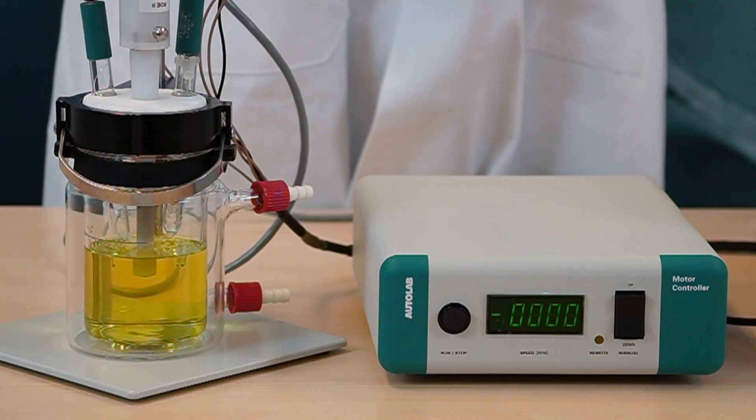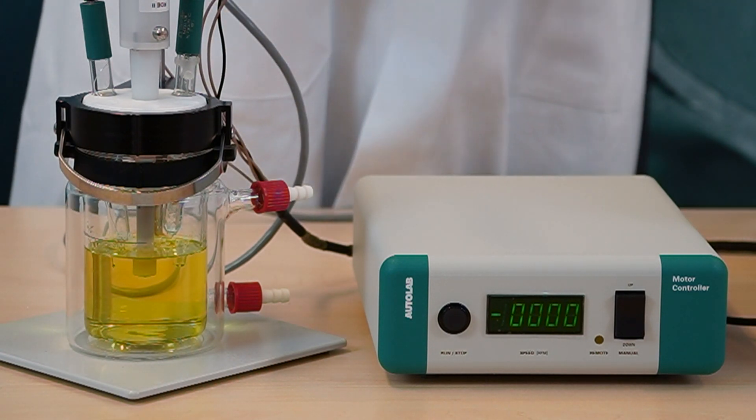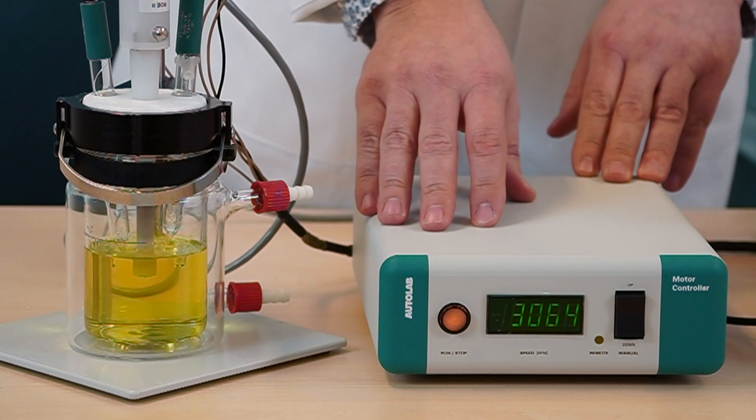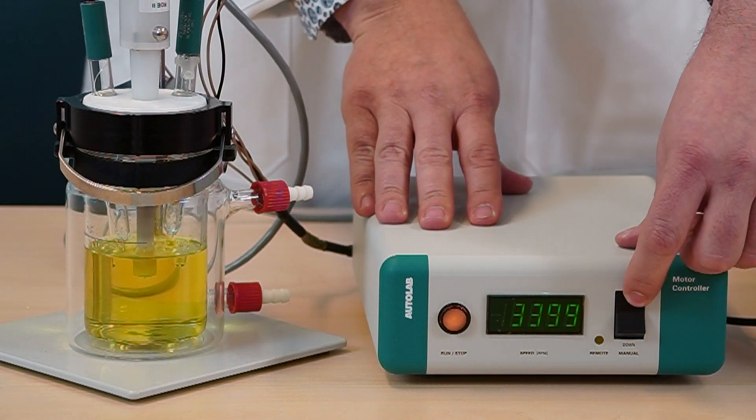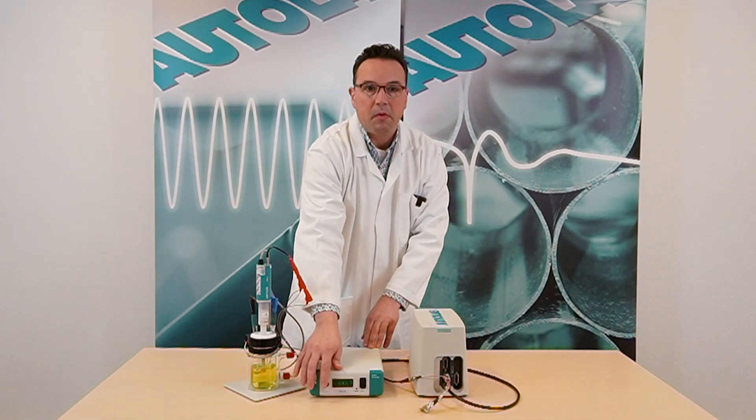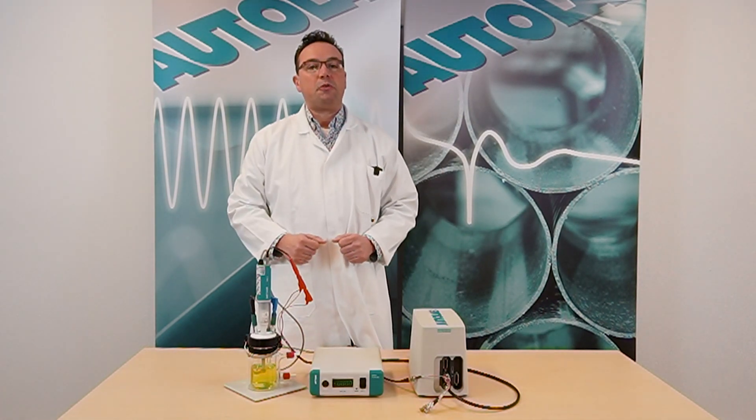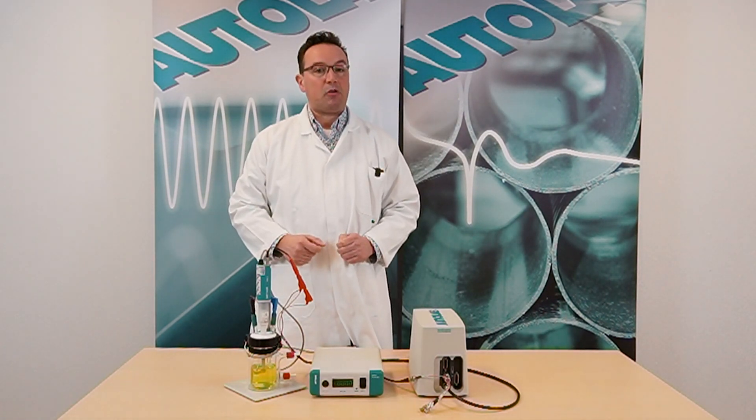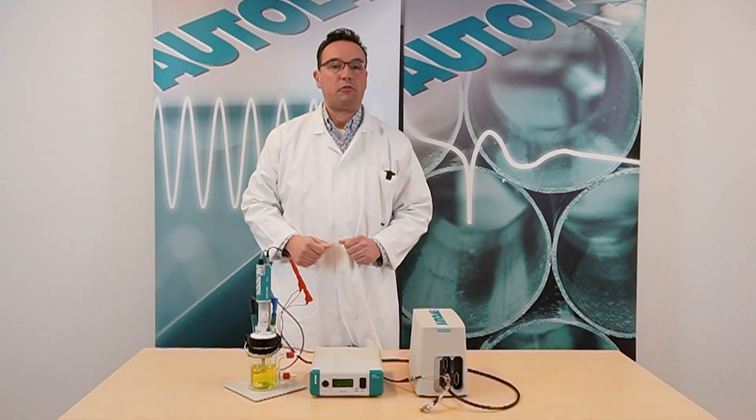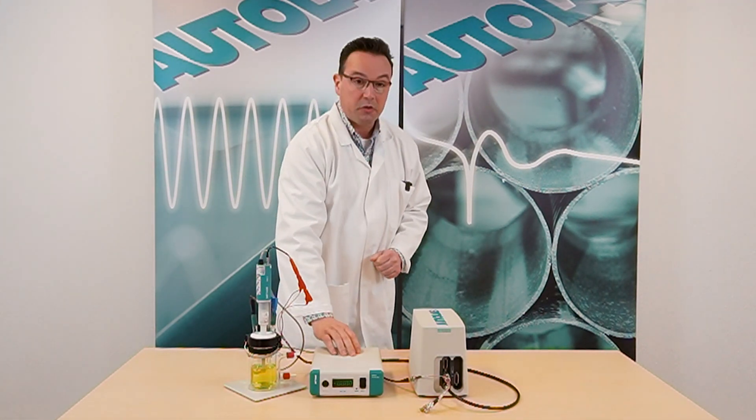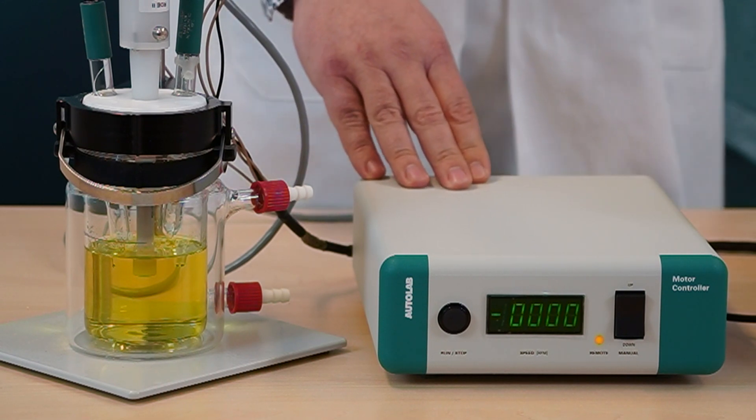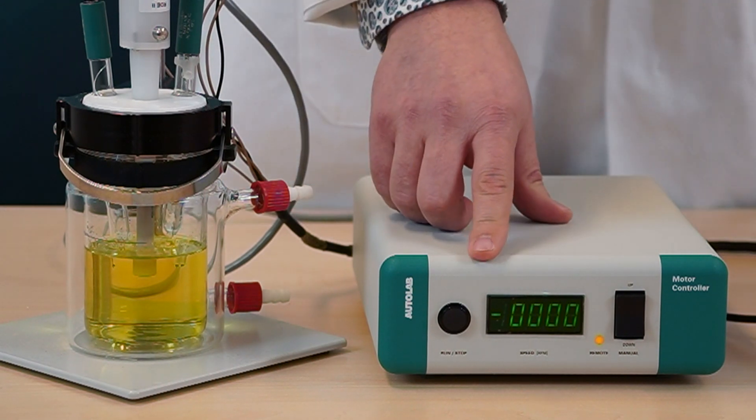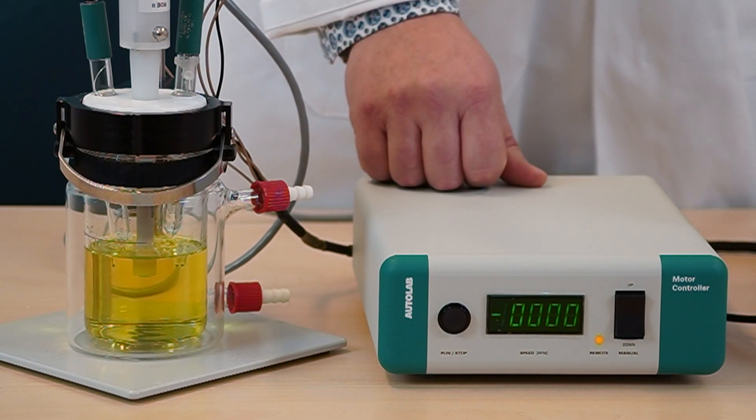The rotation speed can be set manually with the switch on the front panel of the motor controller. The rotation speed can be adjusted with this button here. I will switch off the manual control, because in this experiment we are using the analog output of the Autolab PG-Stat to control the rotation speed of the rotator through the NOVA software. When you are operating the rotator using the remote feature, an orange light will appear in the front of the motor controller.